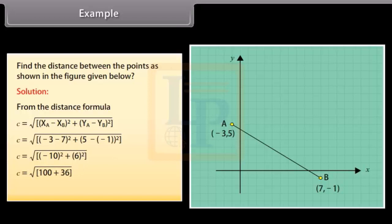C is equal to under root of minus 10 whole square plus 6 whole square. C equals under root of 100 plus 36. C is equal to 11.66.